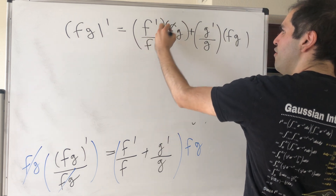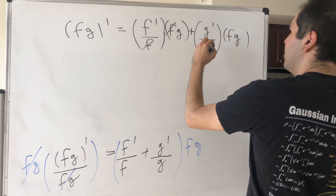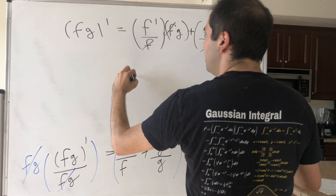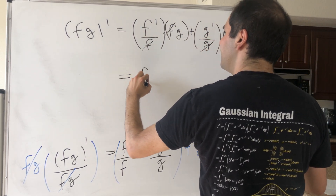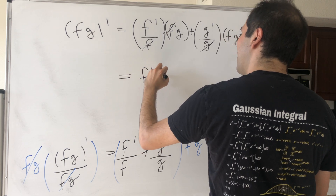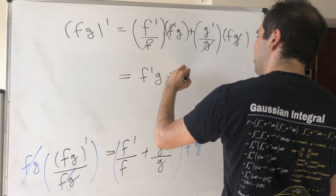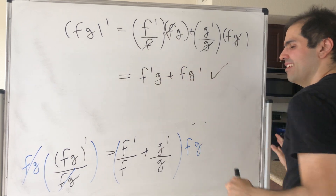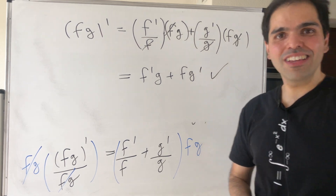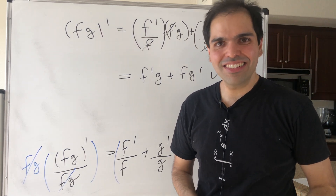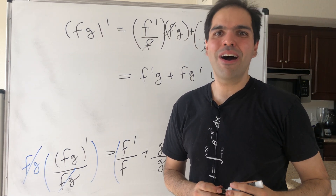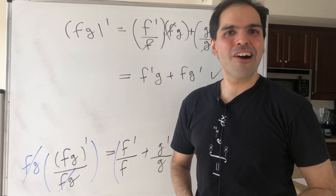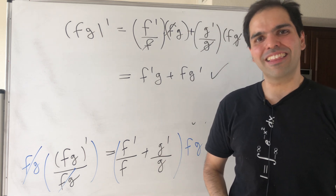The f cancels out and the g cancels out, and we indeed get f prime g plus fg prime. How cool is that? So again, witness the power of the chain rule — it's more powerful than you might think.